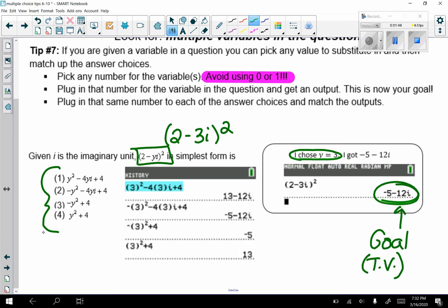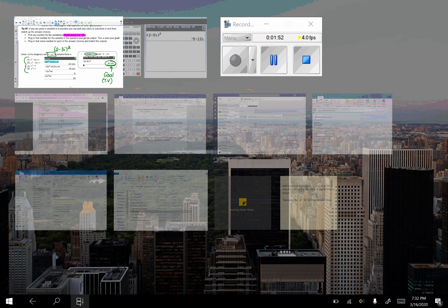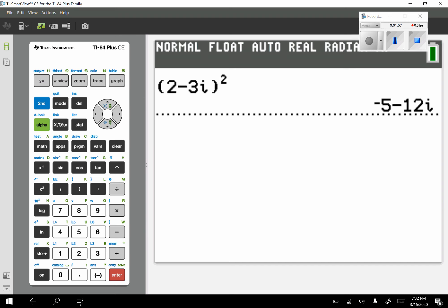I'll do the first one with you, but I have the calculator output here for you. In my home screen once again, choice 1 says y², so I have 3² - 4yi, so 4 times 3 times i, plus 4.